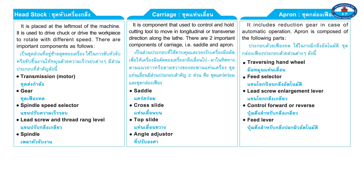Spindle carriage. It is the component used to control and hold the cutting tool, and to move it in longitudinal or traverse directions along the lathe. There are two important components of the carriage: the saddle and the apron.